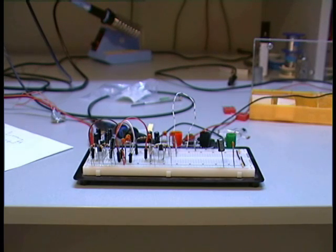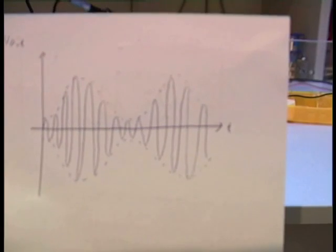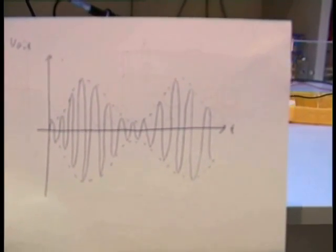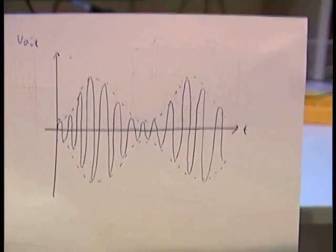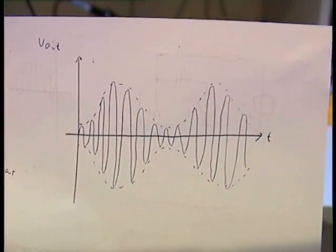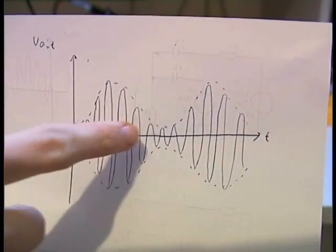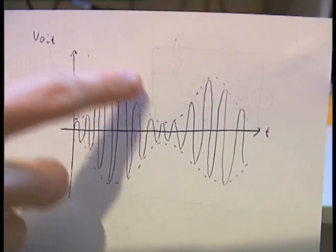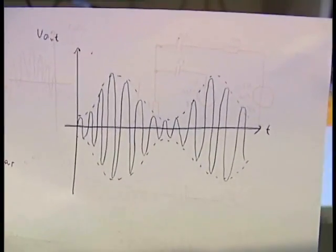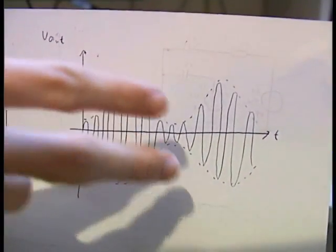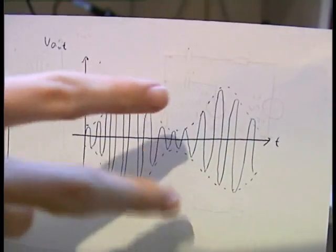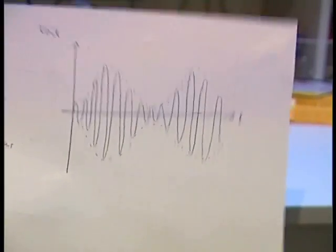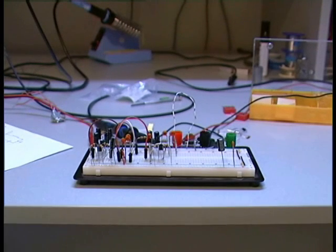AM — amplitude modulation — means that the signal level, the voltage of the signal, is changed over time. Here you can see this is the carrier signal and here this is the modulated signal, and it changes the signal. You can see here the signal level. This is AM, and now I'm showing you how to build a circuit that does AM modulation.